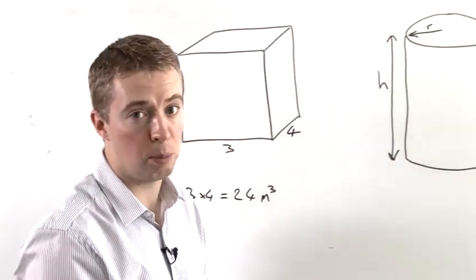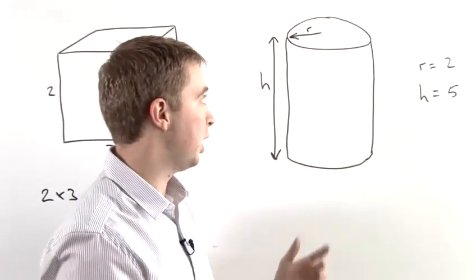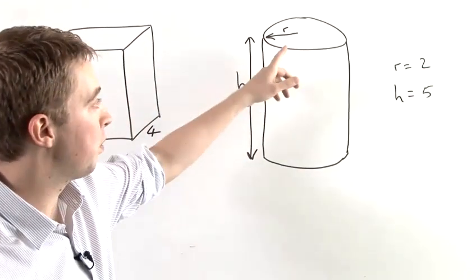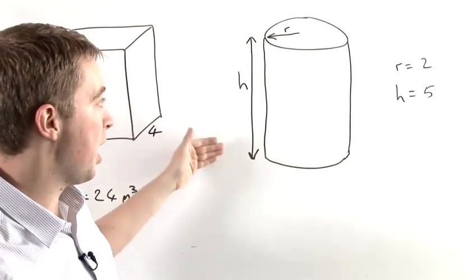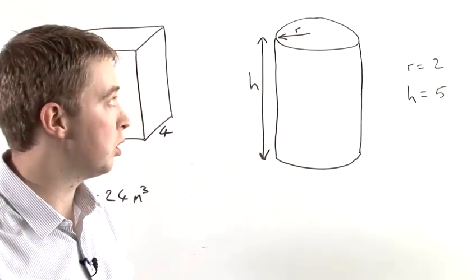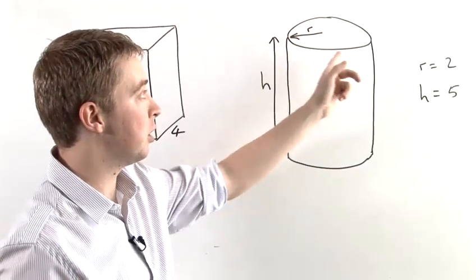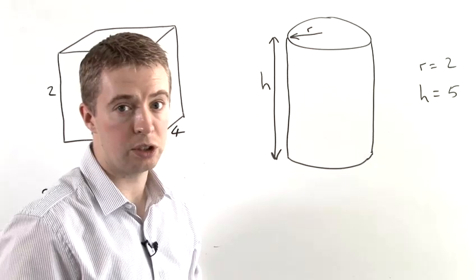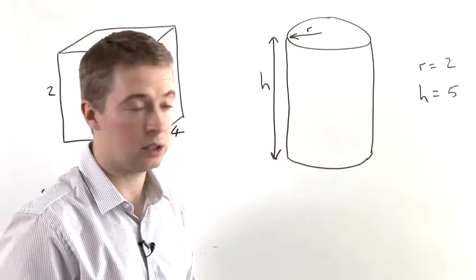So now if we look at a slightly more complicated shape, and we'll look at a cylinder, we have the radius of the cylinder and the height of it. So what we're going to do is first work out the area of this top disc, and then multiply it by the height.